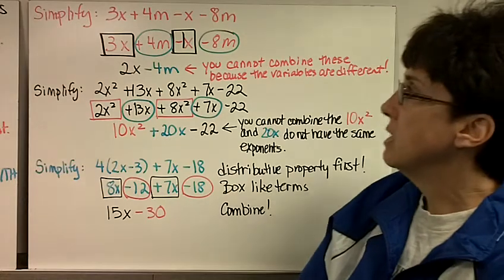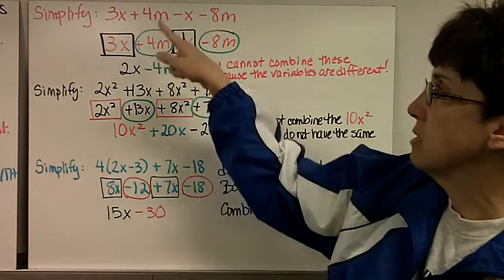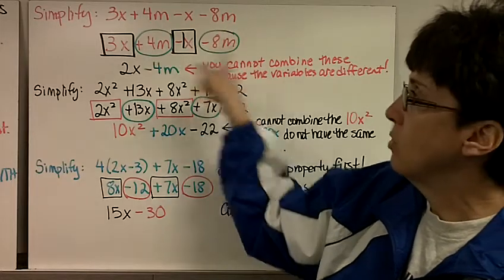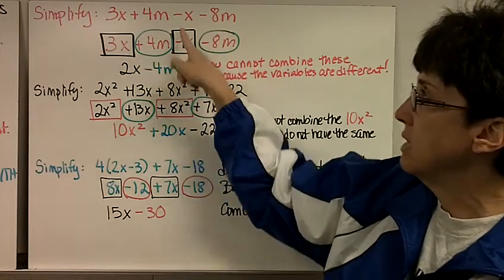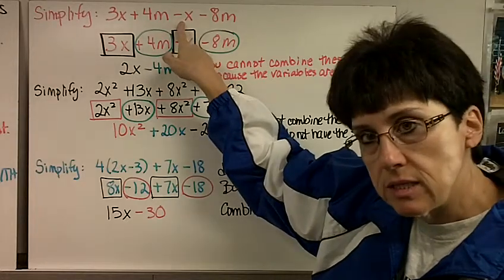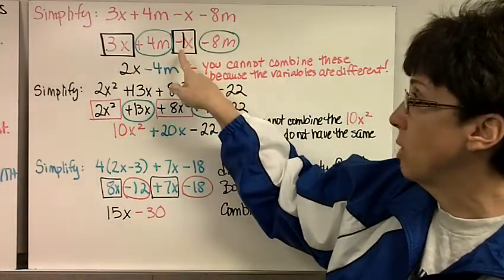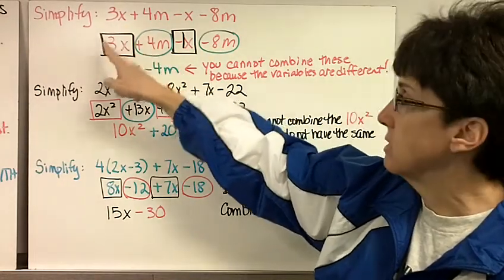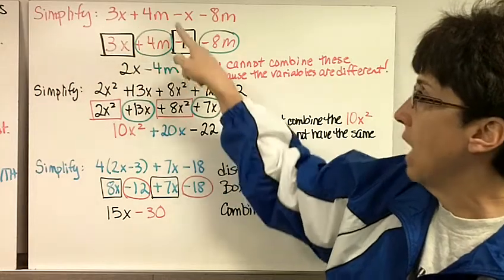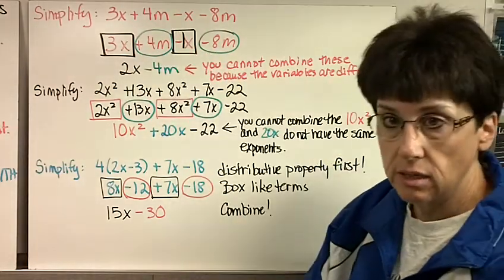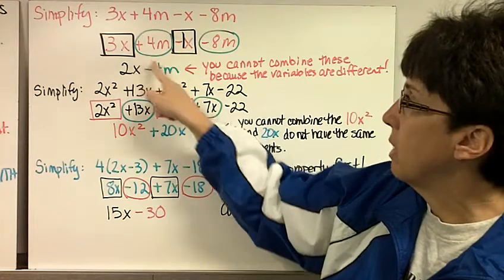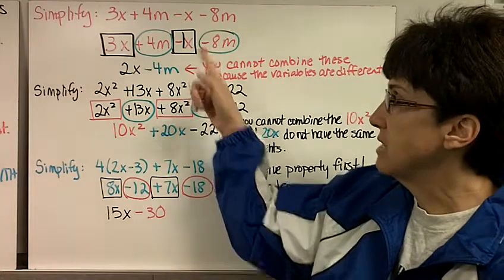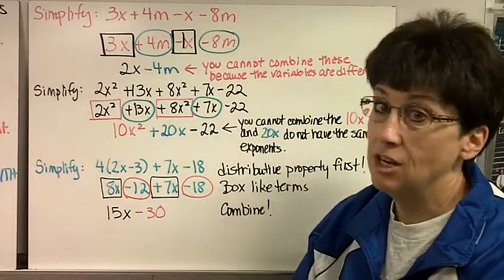Here's another problem. Simplify 3x plus 4m minus x minus 8m. I wrote it again so you could see what I was boxing. And when I did that, you need to remember, how many x's is this? This is just 1. So I put a 1 in front of it, which you can do every time. I'm going to first box my x's. So I boxed the 3x and the negative 1x in black. And then I circled the positive 4m and the negative 8m. Where kids make mistakes is they forget to circle the sign, and then they don't know what to do.